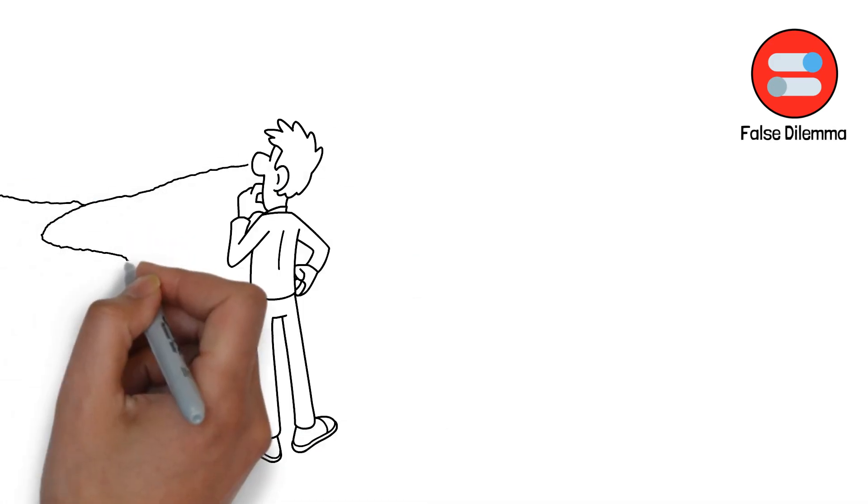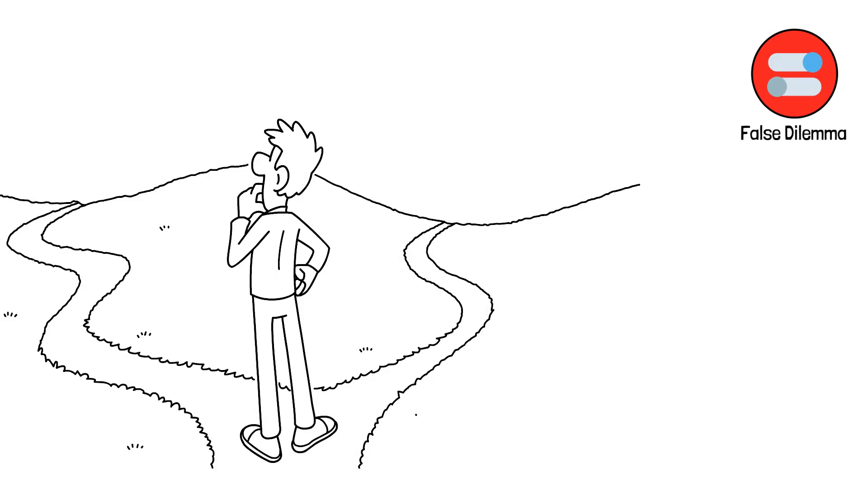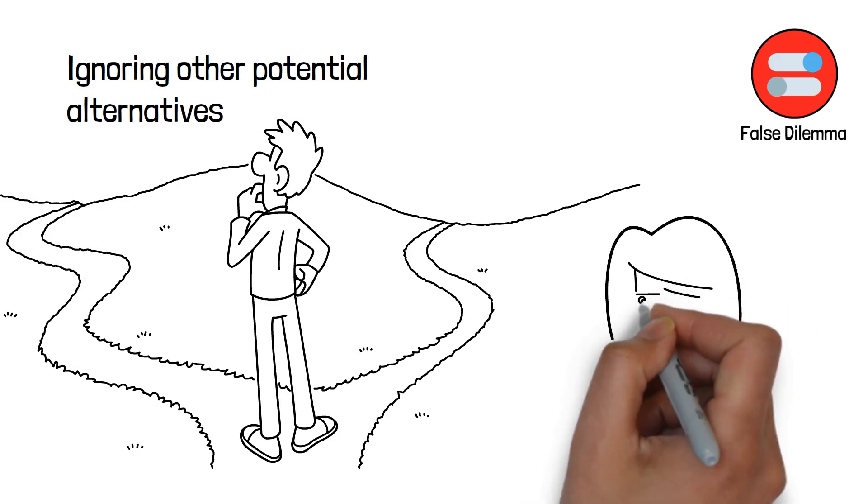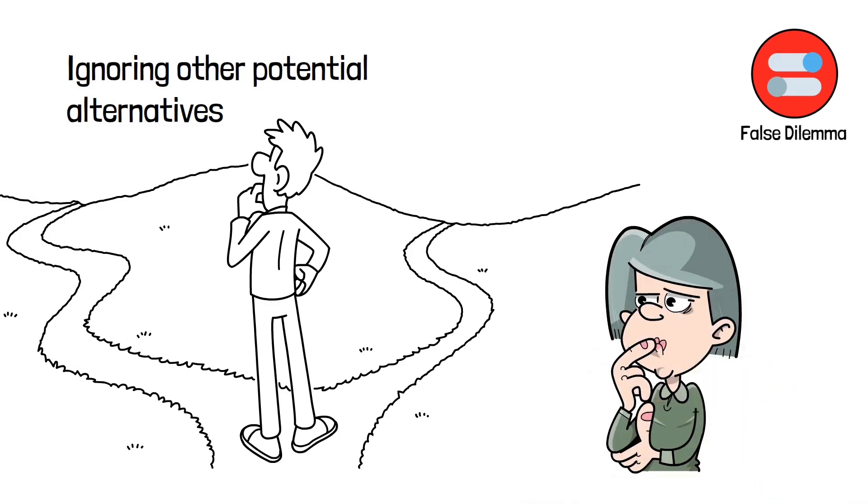4. False Dilemma. Also known as the either-or fallacy, this occurs when only two options are presented as if they are the only possibilities, ignoring other potential alternatives. It oversimplifies complex issues and limits the range of possible solutions or perspectives, leading to an incomplete or inaccurate understanding of the situation.